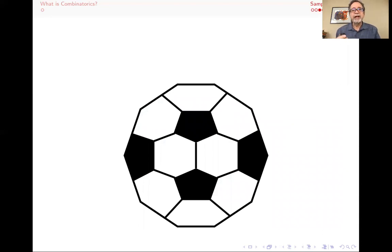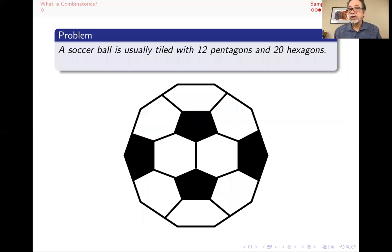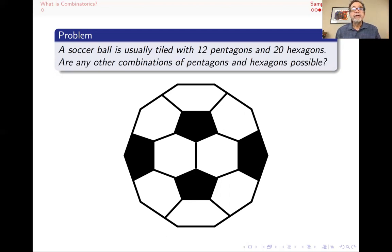Here's a problem that's also a counting problem, but a different kind. Here's a soccer ball. Usually a soccer ball, the typical soccer ball, is tiled with 12 pentagons and 20 hexagons. Now, what if I want to have pentagons and hexagons, but I want different numbers of them? And I still want them to be sort of regular in the sense that at every corner, when these shapes come together, I want three of them, or maybe four, or maybe two, or maybe five. So is there any other combination of pentagons and hexagons that is possible? Or can I come up with other kinds?